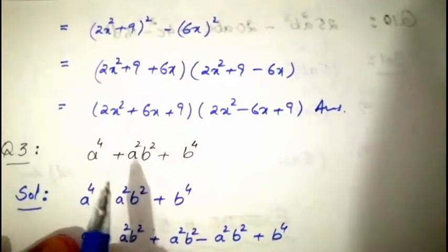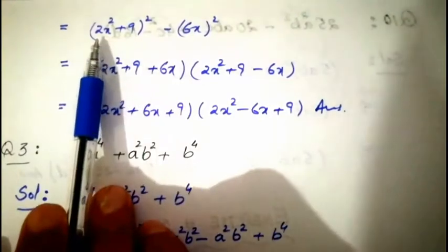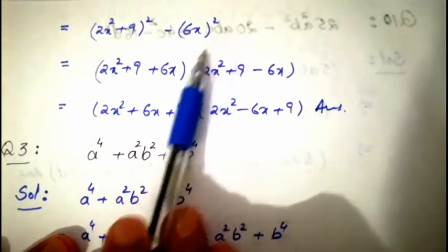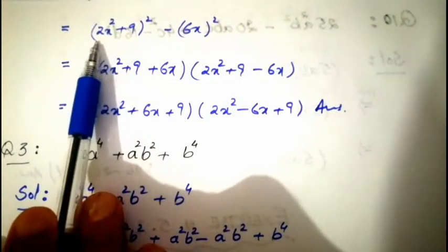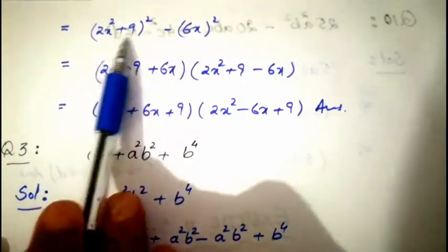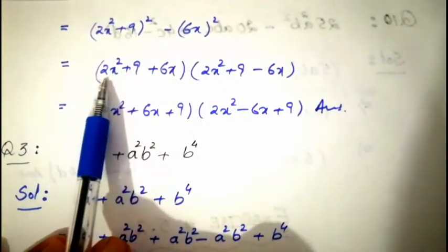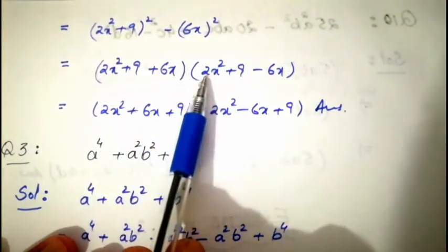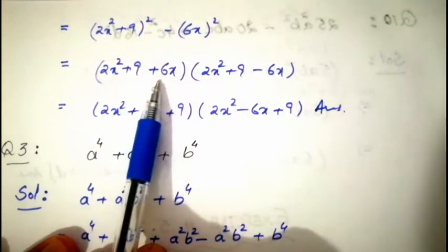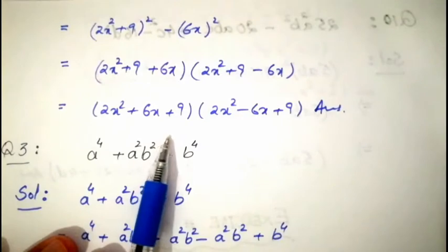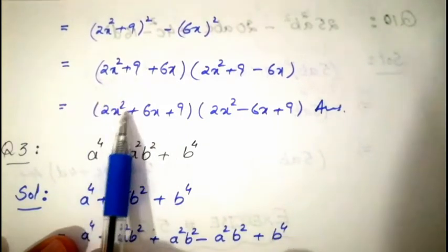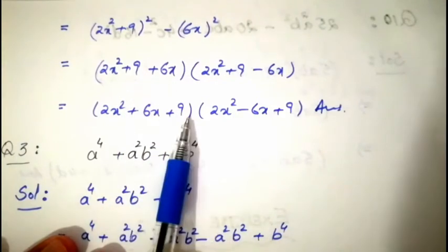In the next step: (2x² + 9)² − (6x)². Applying the formula with a = 2x² + 9 and b = 6x: we get (2x² + 9 + 6x)(2x² + 9 − 6x). Simplifying by writing x terms first: (2x² + 6x + 9)(2x² − 6x + 9). That is the answer to question number two.